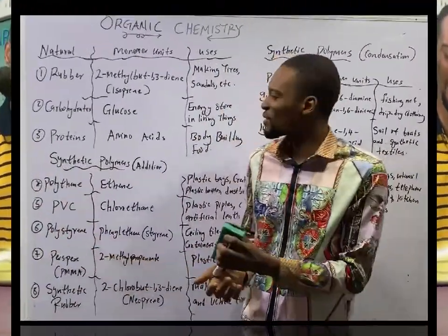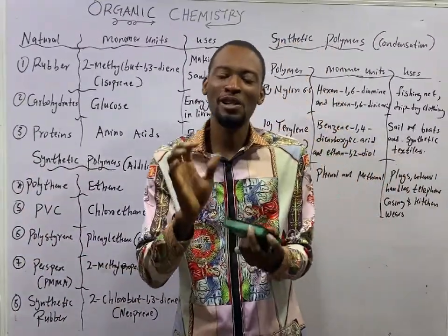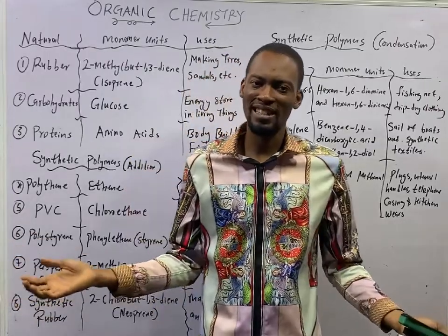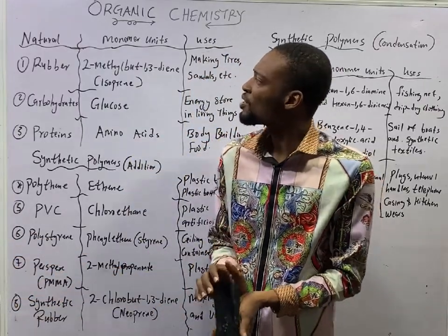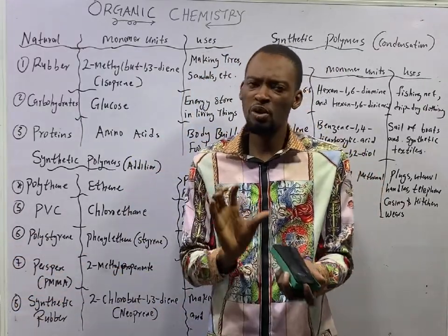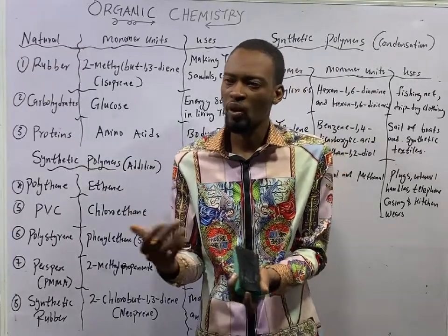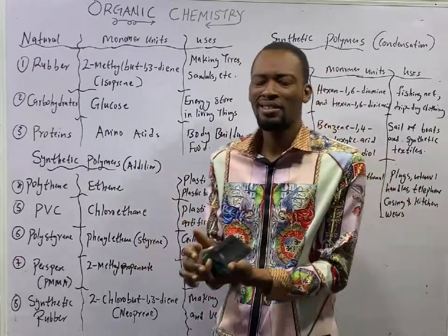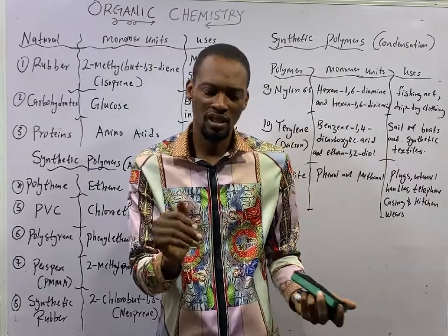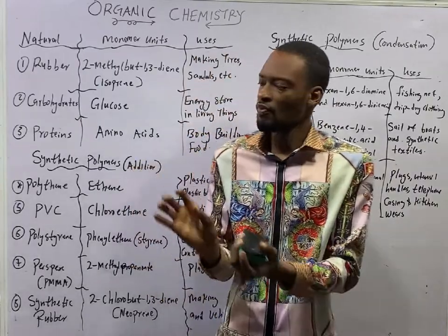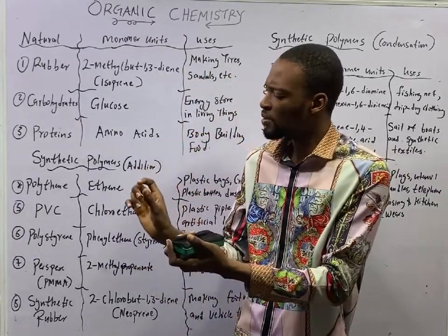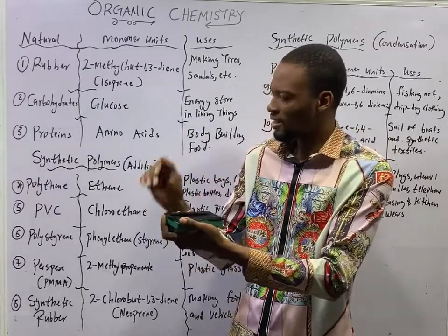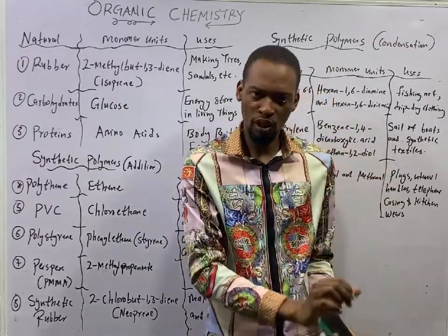This is episode number 98 of the 120 Days to JAMB Chemistry with Flash Isaac. In the previous episode, we introduced polymerization. We said when monomer units combine, they give us polymers. We also agreed that there are two types of polymers: the natural polymers and the synthetic polymers.